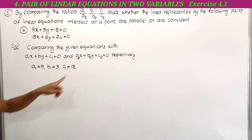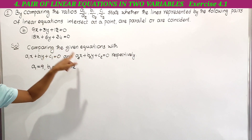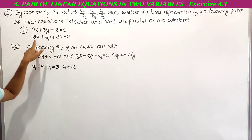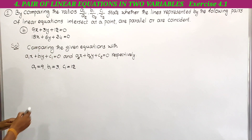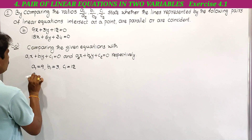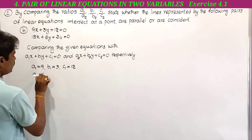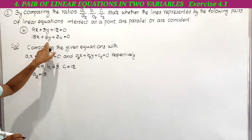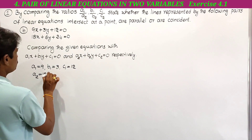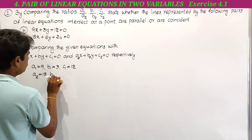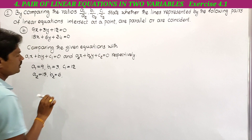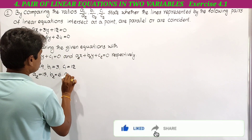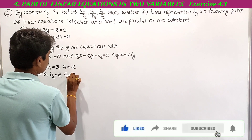Next we have to compare the second equation with a2x plus b2y plus c2 equal to 0. Here a2 is the x coefficient; the x coefficient is 18, therefore a2 is equal to 18. Here b2 is the y coefficient; the y coefficient is 6, so b2 is equal to 6. Here c2 is the constant; c2 is equal to 24.